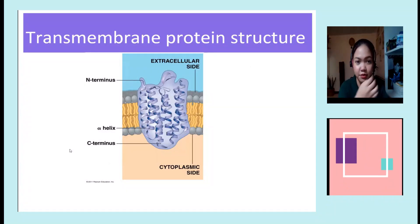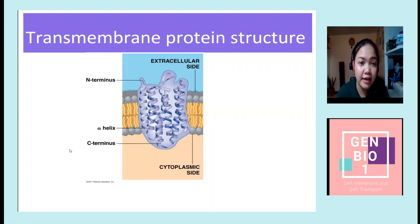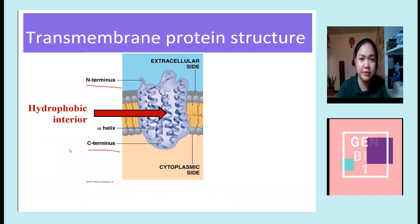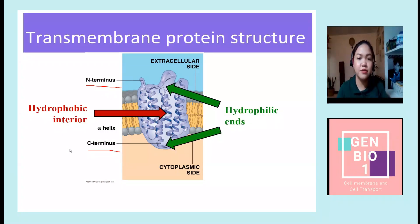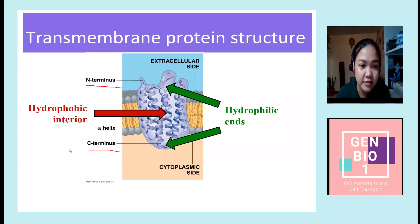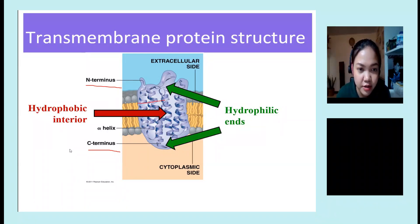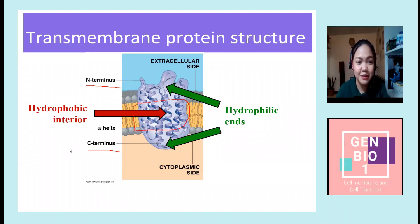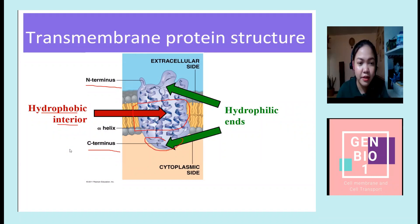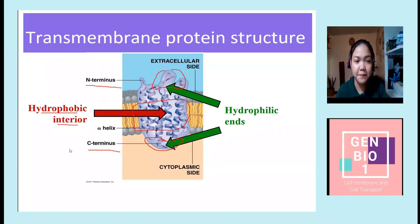This is an example of a transmembrane protein. On the extracellular side is the N-terminus, and on the cytoplasmic side is the C-terminus. The middle part is hydrophobic — it doesn't like water — while the hydrophilic ends, both head and tail, love water. Because of that, the structure differs: the middle part is composed of alpha helices, which is hydrophobic, while where it comes in contact with water, it is non-helical in structure.